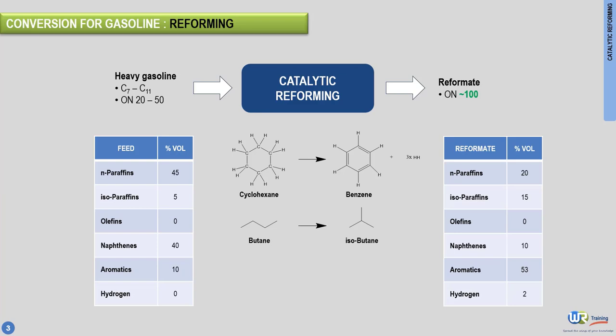The latter reaction is quite similar to what occurs in a type 1 isomerization process. Recall, isomerization was discussed in a previous video. Another example is the conversion of hexane, a normal paraffin, into cyclohexane, a naphthene, with the release of hydrogen. Overall, the catalytic reformer converts many hydrocarbons present in the feed into isoparaffins or aromatics. These hydrocarbon intermediates have a good octane number, making the final product, reformate, an ideal blending component for gasoline.